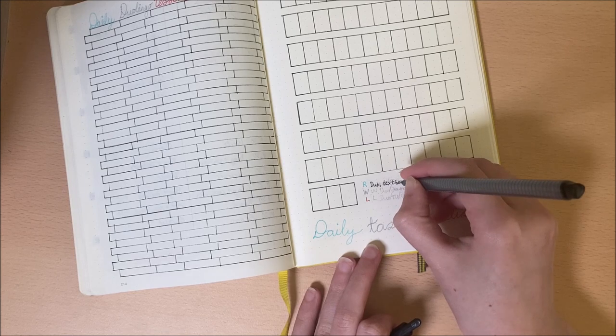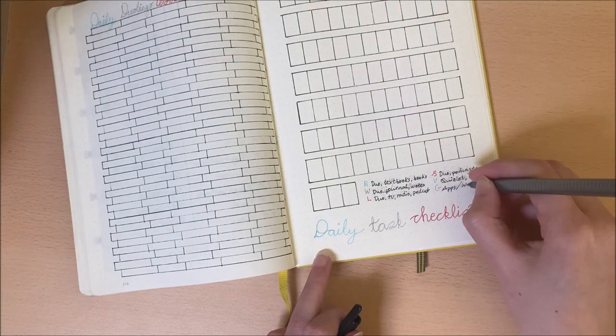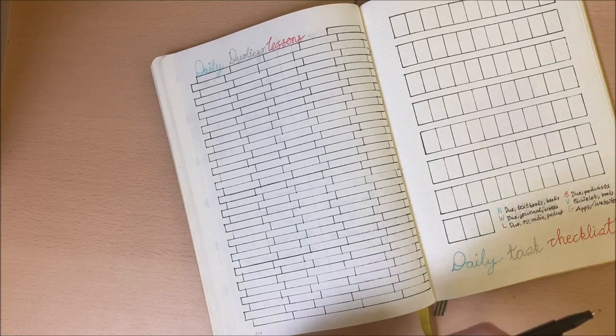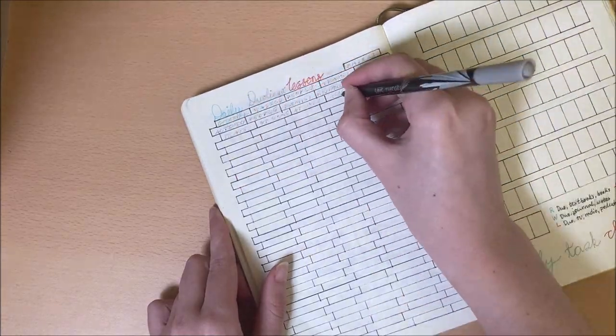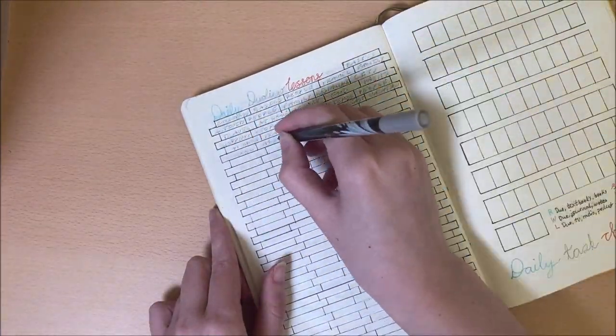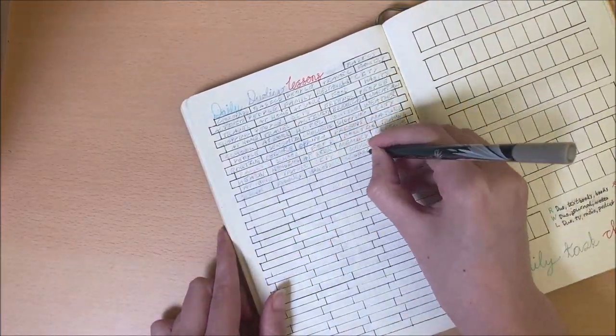So now I am just inputting what I count as reading, writing, listening, speaking, vocabulary and grammar, and also inputting the names of all 178 French Duolingo lessons. This did take absolutely forever, but I love the final effect.